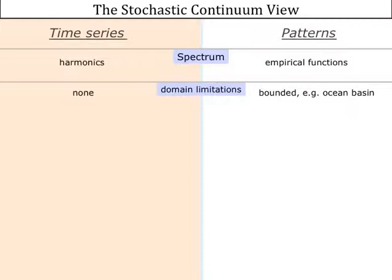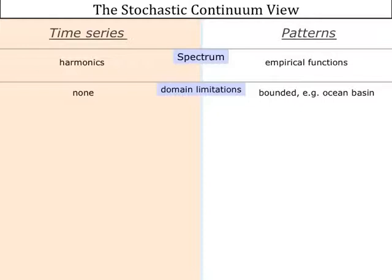To understand why we approach time series and pattern analysis differently, we have to understand what makes them different and how we could have a similar structure. There are some differences between the two. In time series analysis we have a power spectrum based on harmonics — sine and cosine functions — which we fit to the data. In pattern analysis we don't do this; we have empirical functions, the principal components.